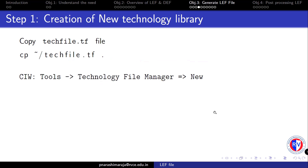Moving to step number one — the creation of a new technology library. Before we generate either the technological part of the LEF or the cell descriptive part of the LEF, one has to create a new technology library, which is basically different from the user-defined library created at the beginning of this lab. This new technology library is a derived version of our GPDK technology library, but modified to suit the requirement of generating our LEF file without throwing any errors during the process of generation.